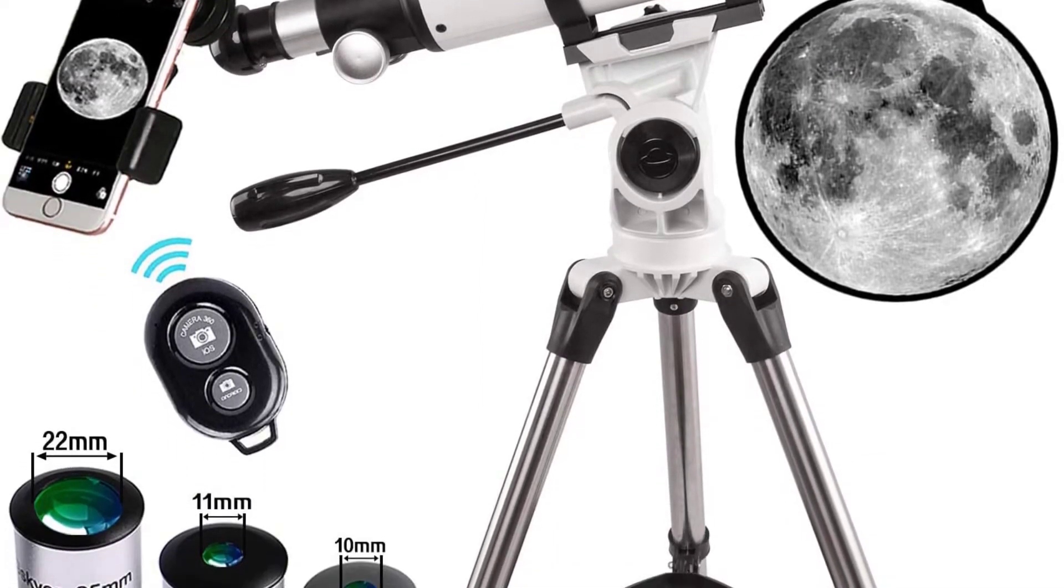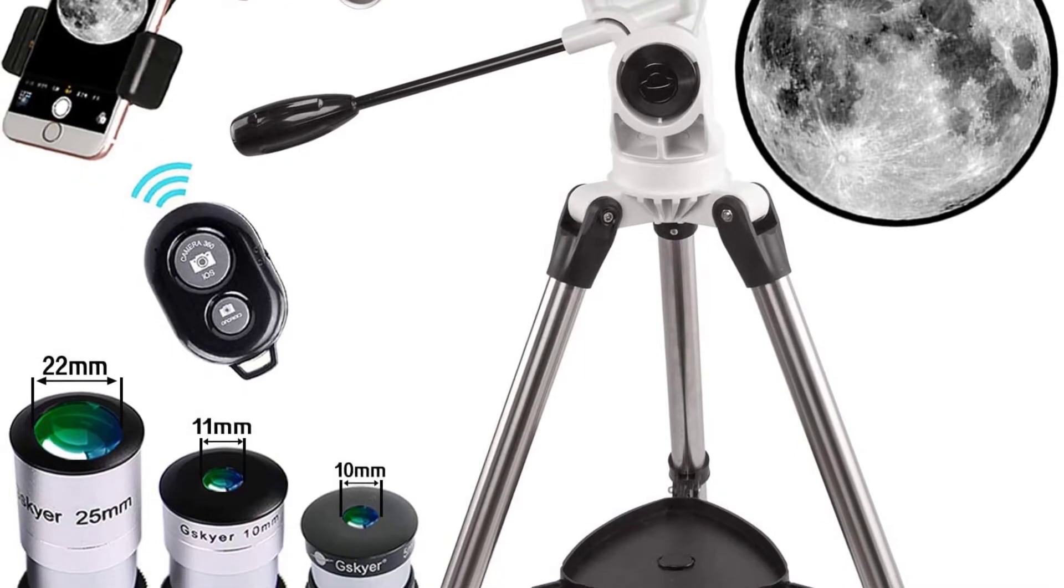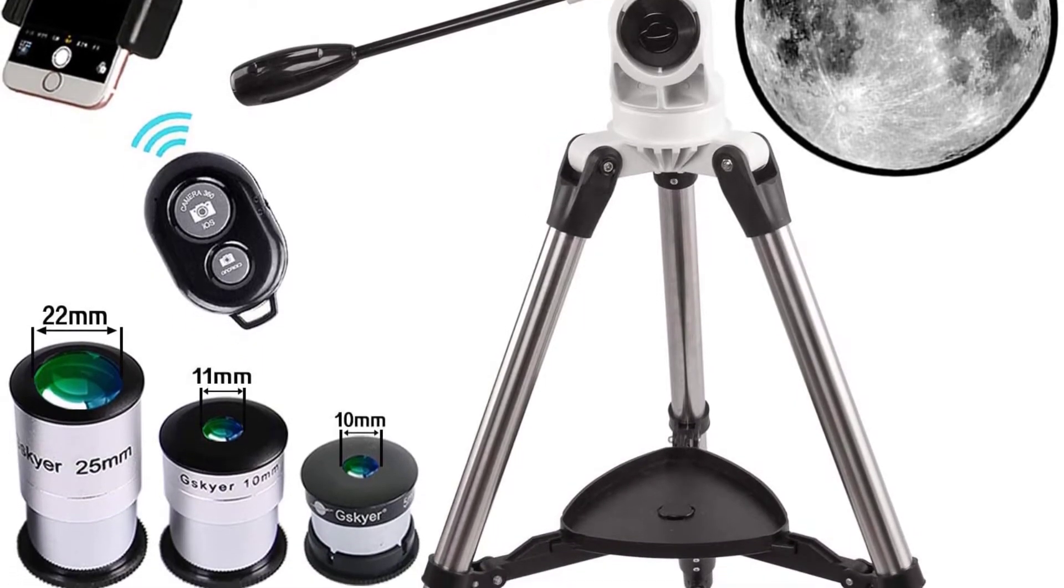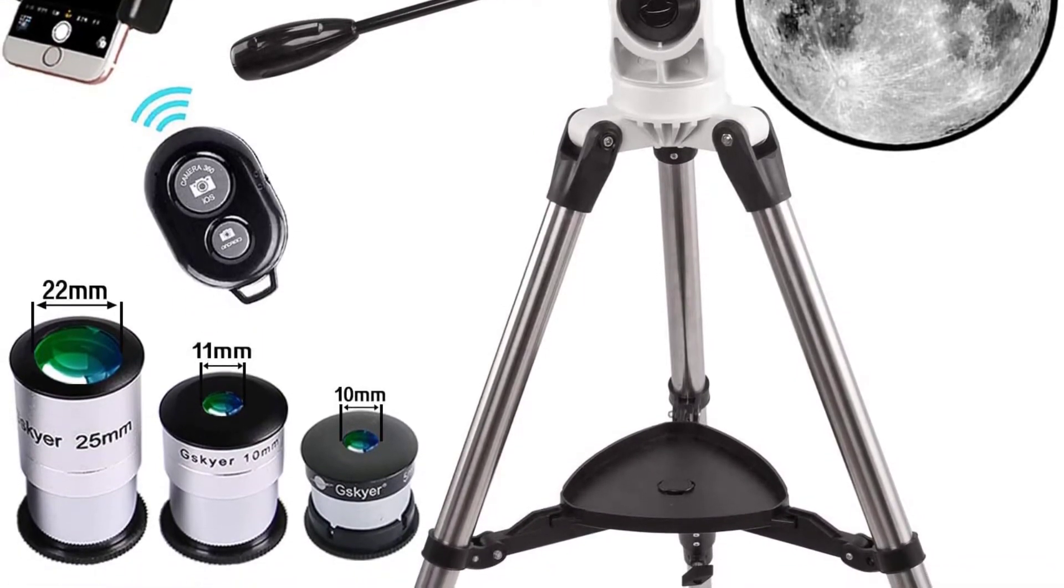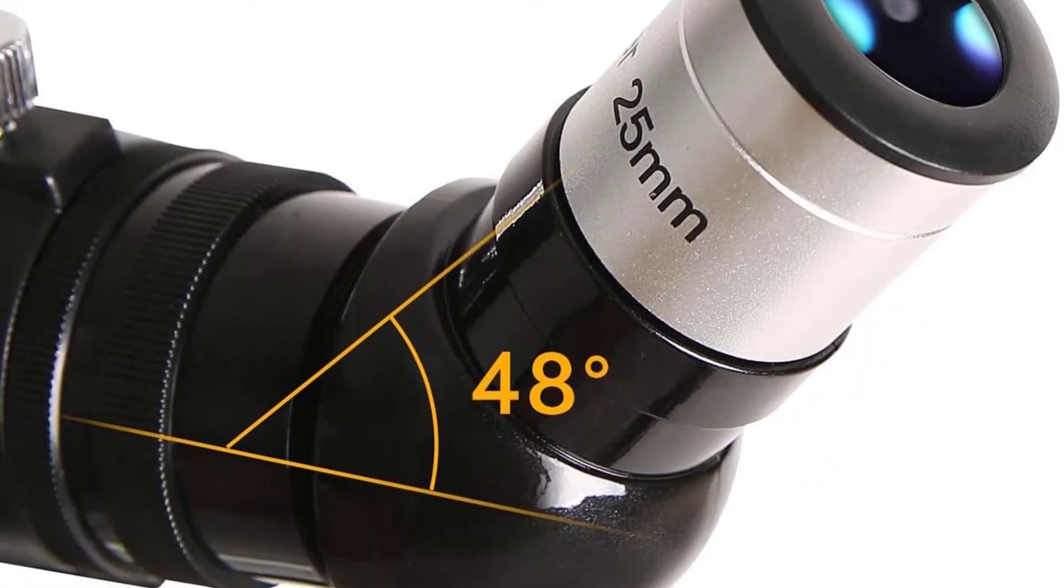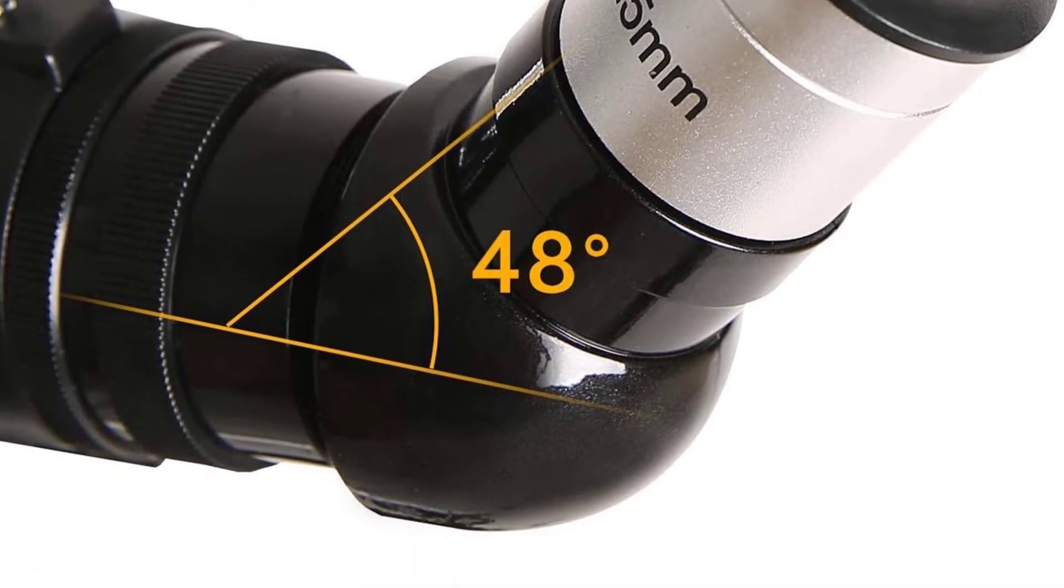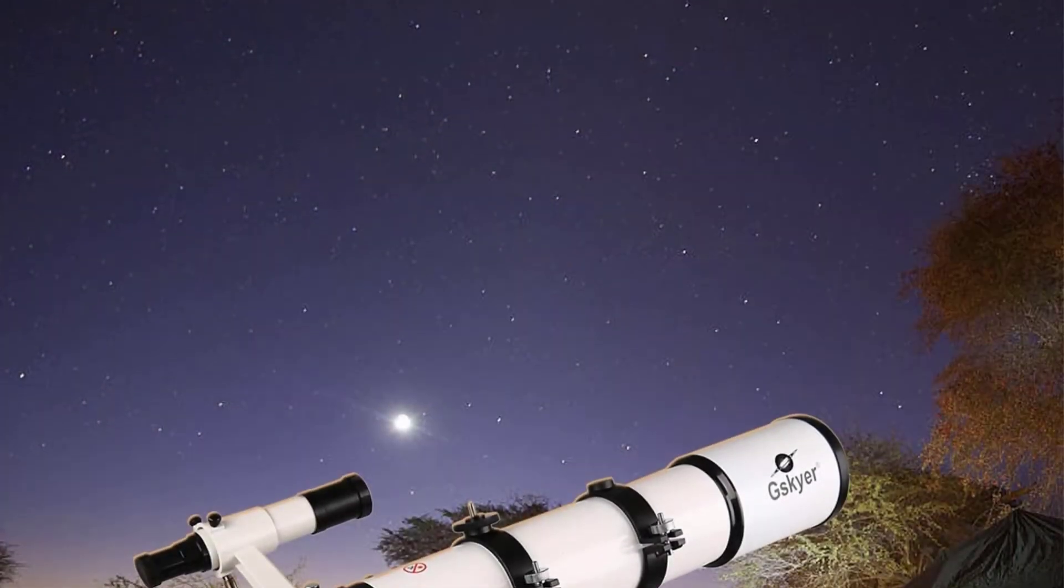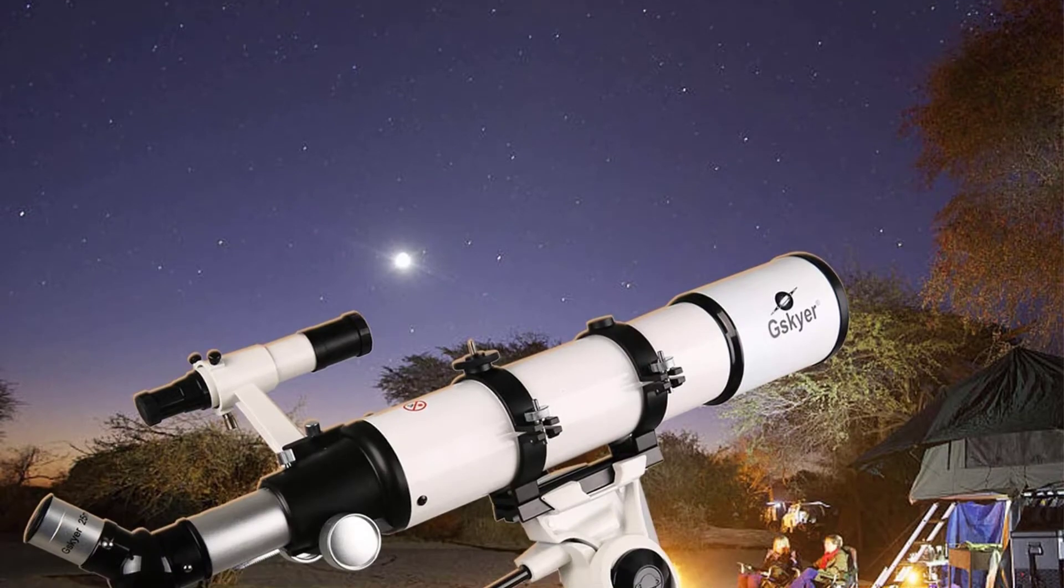Another great feature is the Altazimuth mount, which uses a slow-motion control to help you track those celestial bodies across the sky. On the tripod is an accessories tray to hold those eyepieces or other items needed. This keeps everything close at hand, so they can be easily found, even on the darkest night.